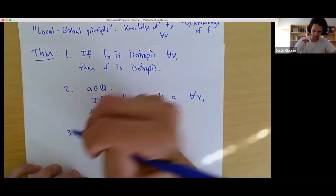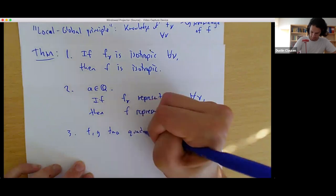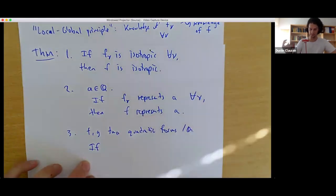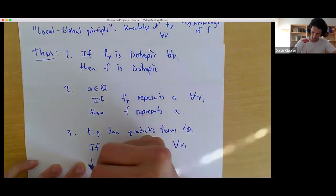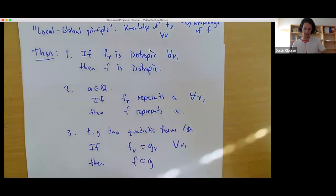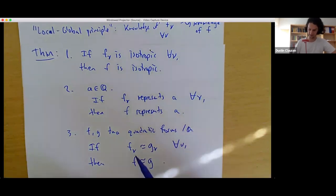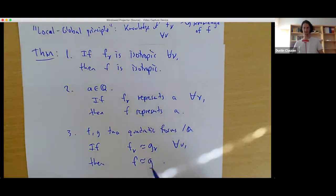The third form: instead of just having F, we also have a G. So F and G are two quadratic forms, and if F_V is isomorphic to G_V for all V, then F is isomorphic to G. This notion of isomorphism of quadratic spaces corresponds to saying that you can get from F to G by some linear change of variables. So if there's a linear change of variables — allowed to be in Q_V, selected completely independently as V varies — then there has to be some rational linear change of variables that connects F to G.